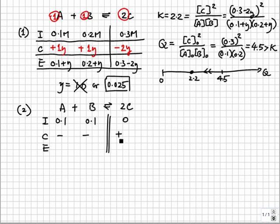If you had calculated Q, you would see that it is 0, and so it is indeed less than K, and the reaction should go to the right. The natural choice for the changes would have been minus Y, minus Y, and plus 2Y.